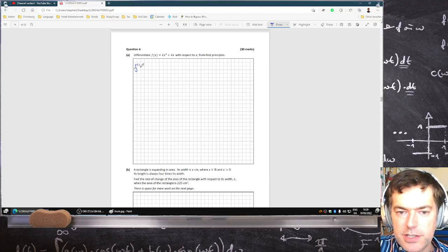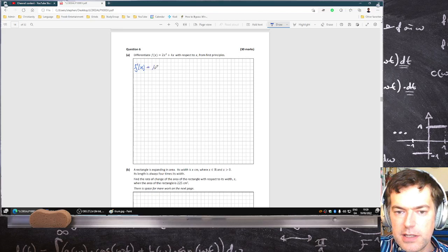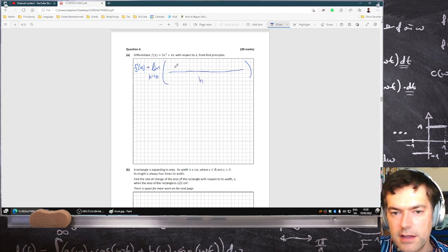So f dash x would equal the limit as h goes to zero, and then it's f of x plus h.